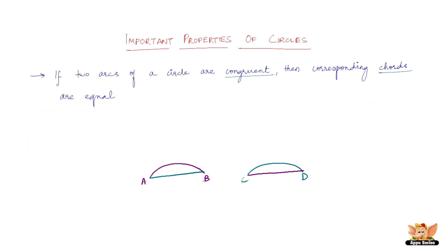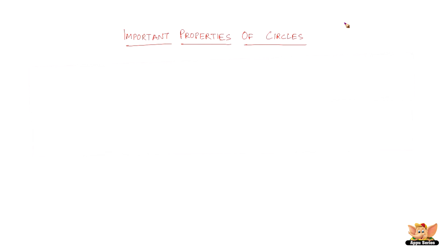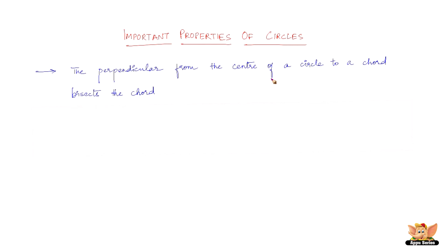The second statement is the converse of the first one. If two chords of a circle — say AB and CD — are equal, then their corresponding arcs are congruent to each other. So if chords AB and CD are equal, then arc AB and arc CD would be congruent to each other.